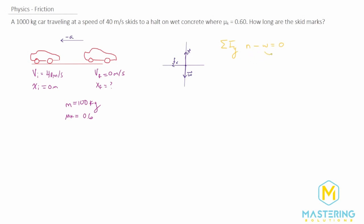We can move the weight to the other side, so normal is equal to the weight, and of course we can write weight as mg. Now that we've summed forces in the y direction, conceptually what we're going to do next is find the acceleration, and then use a kinematic equation with that acceleration to figure out how far the car traveled.